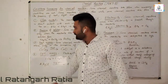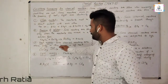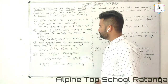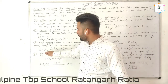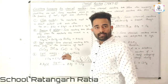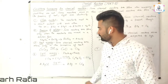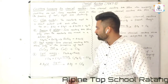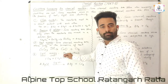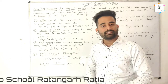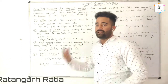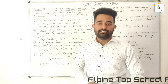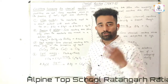The third condition is heat energy. Some chemical reactions take place only in the presence of heat. For example, when calcium carbonate — known as limestone — is heated, it forms two products: calcium oxide and carbon dioxide. It means some reactions take place only in the presence of heat.